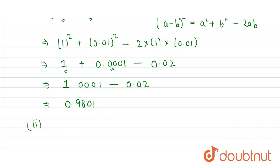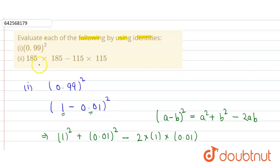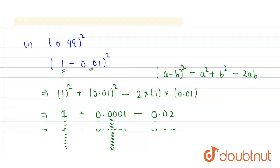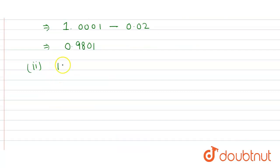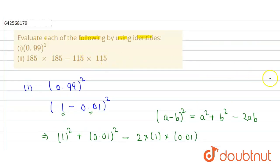Similarly, in the second part we have to solve the numeric expression 185 × 185. So it is 185 × 185 - 115 × 115.